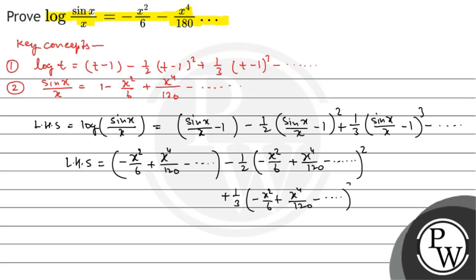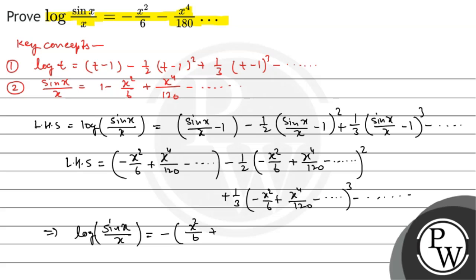So we get the series. It implies the left hand side — that is, log of sine x divided by x — when we solve the right hand side of the above expression, we get negative x squared divided by 6, plus x to the power 4 divided by 180.